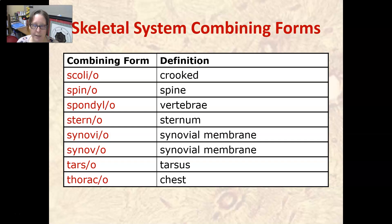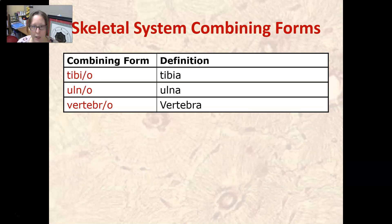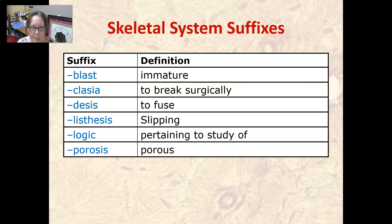Scolio means crooked — more specifically, an S-shaped sideways curvature of the spinal column. Spino means spine. Spondylo means vertebra, which is harder to associate. Sterno means sternum. Synovio means synovial membrane. Tarso means tarsus, the ankle bones. Thoraco means chest or thoracic. Tibio means tibia, the shin bone, one of the lower leg bones. Ulno means ulna, one of the forearm bones. Vertebra means vertebra — that one's easier since it makes intuitive sense.